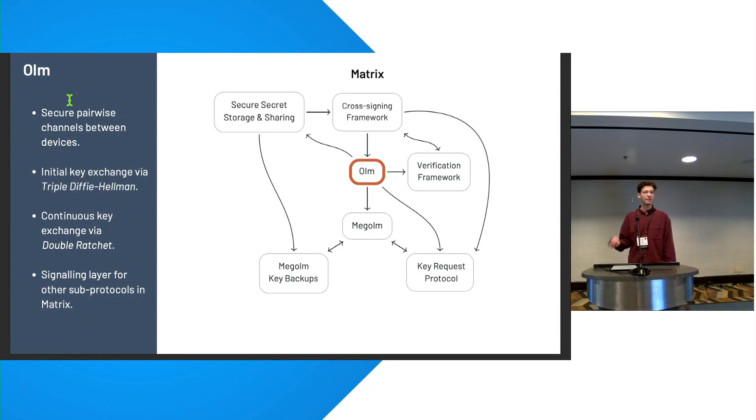Once we have this mapping, we can then create secure pairwise channels between these devices. And that's what the Ohm protocol provides. You can think of this as a signal derivative, where they use triple-Diffie Hellman for the initial key exchange, and they combine this with a double ratchet for continuous key exchange. This protocol isn't used for actual messaging. It's just used as an underlying signaling layer for the other sub-protocols.